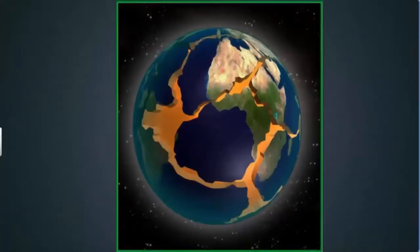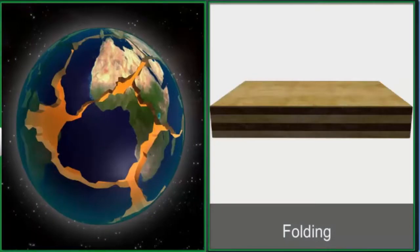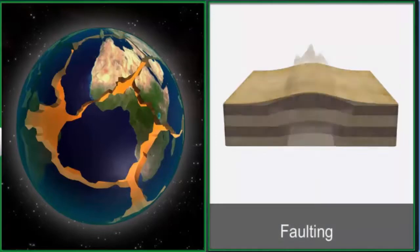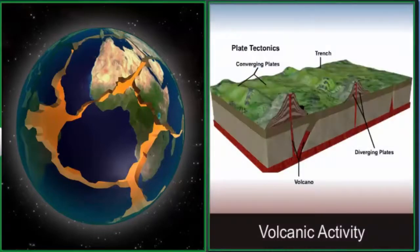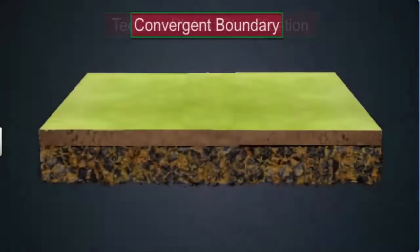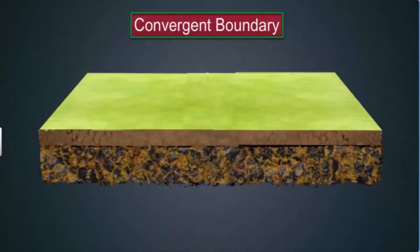When the plates move, they cause disturbances in the continental crust. This leads to folding, faulting, and volcanic activity. In fact, most volcanoes are located at the edges of the plates. These plates are classified into convergent boundary, divergent boundary, and transform boundary.